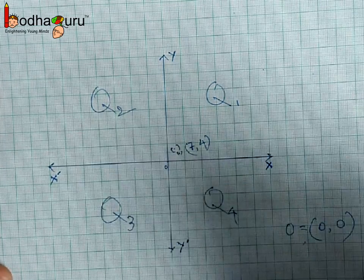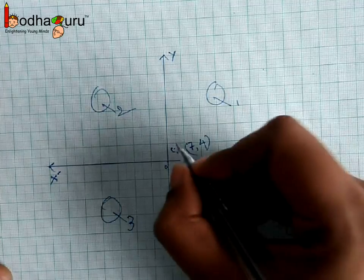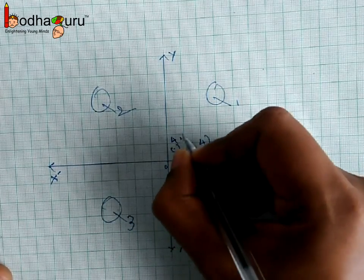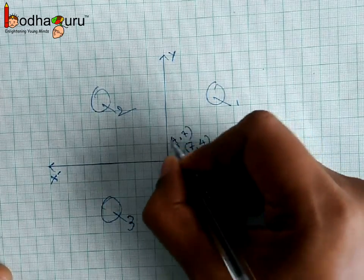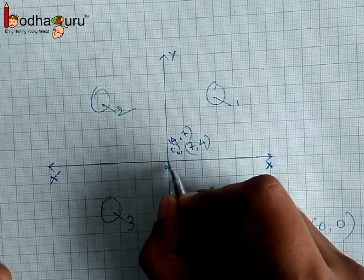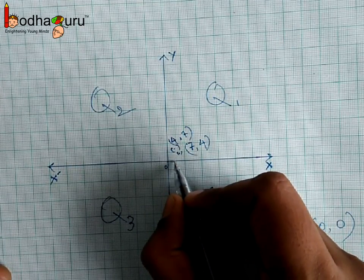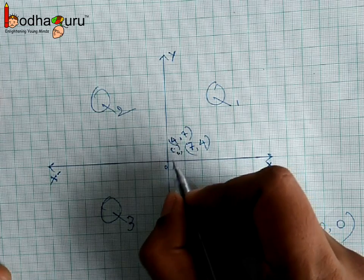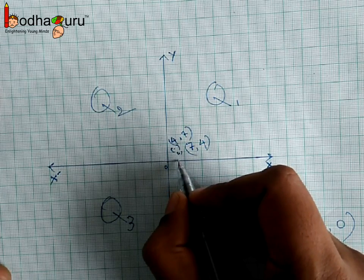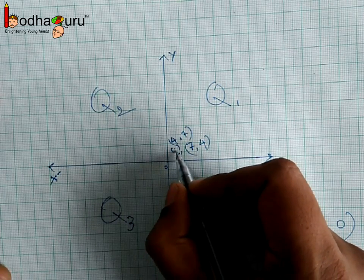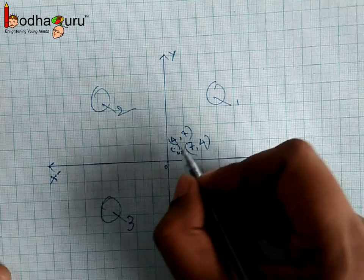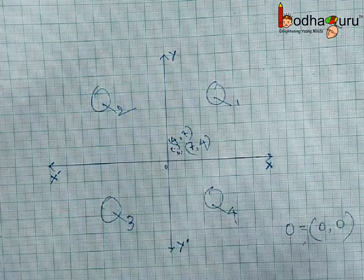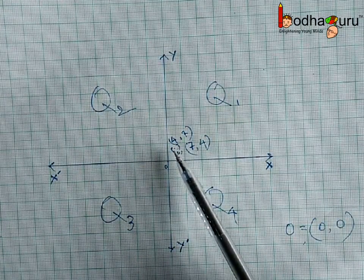Let us plot a point represented by the coordinate (4, 7), that is x equals 4 and y equals 7. We start from the origin, go right by 4 units to get x equal to 4, then from here we go up 7 units to get y equal to 7. So this is the point with coordinate (4, 7).